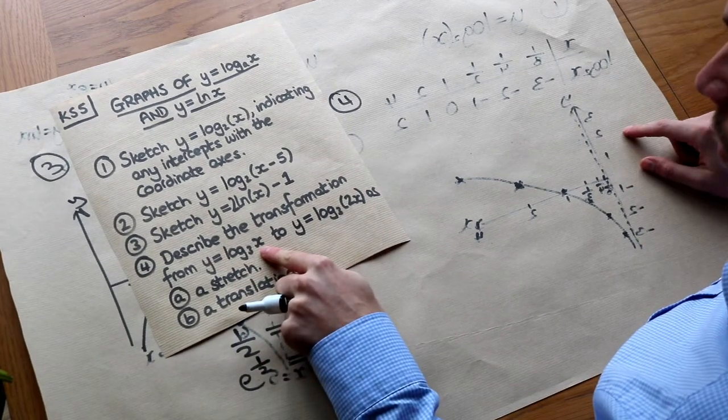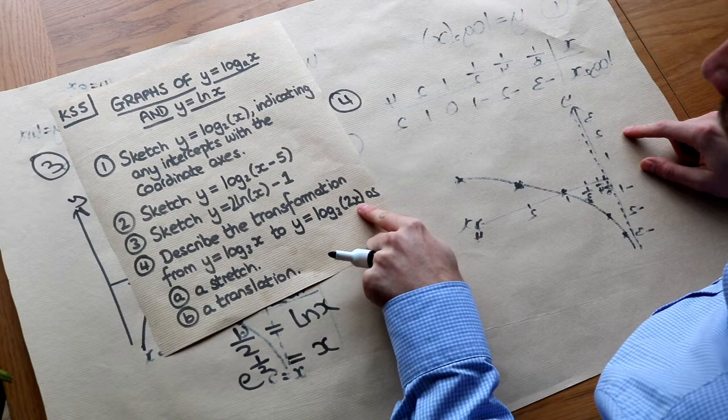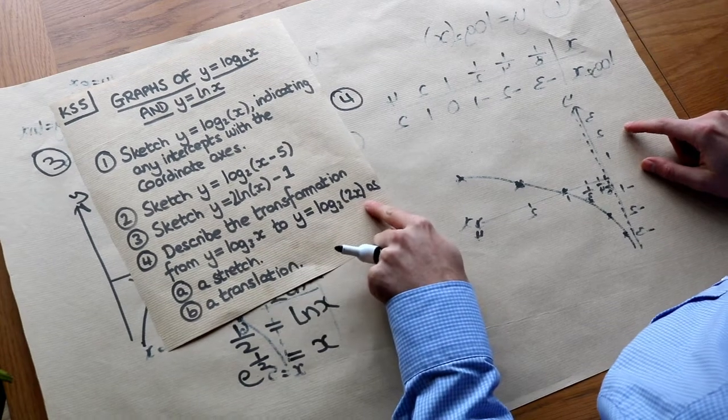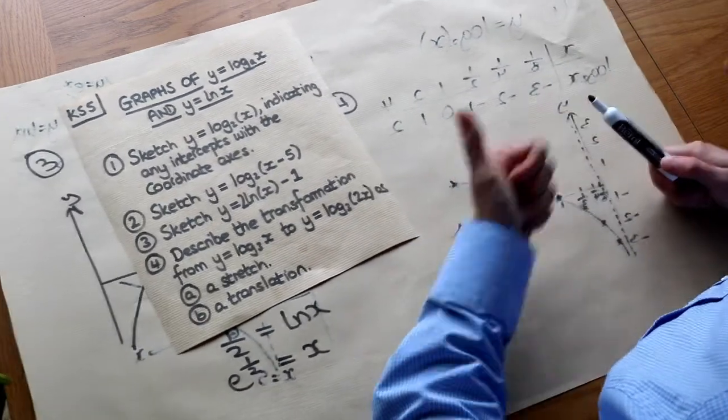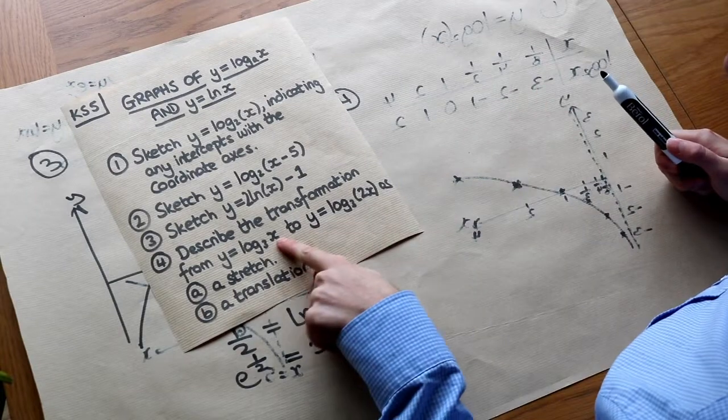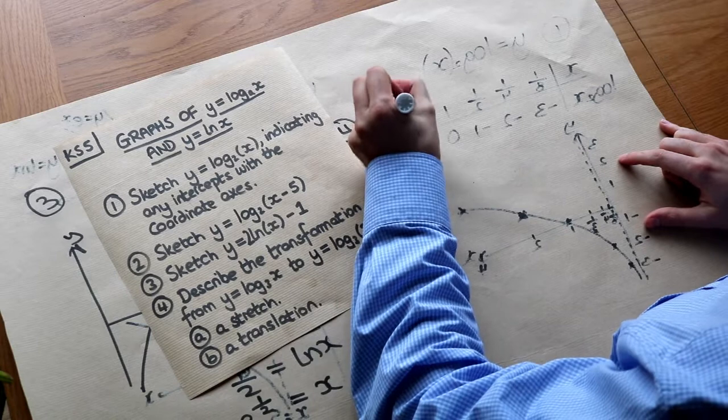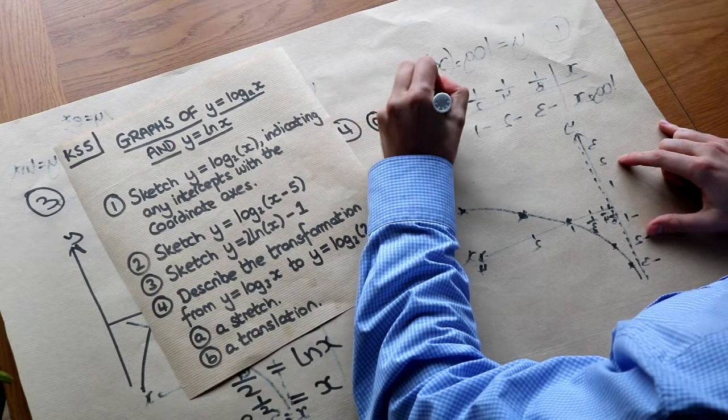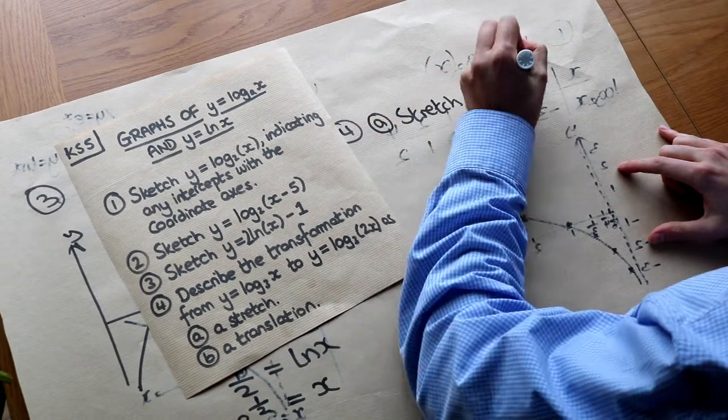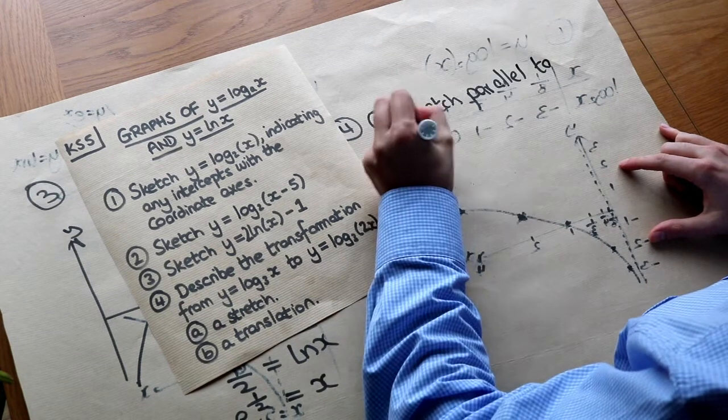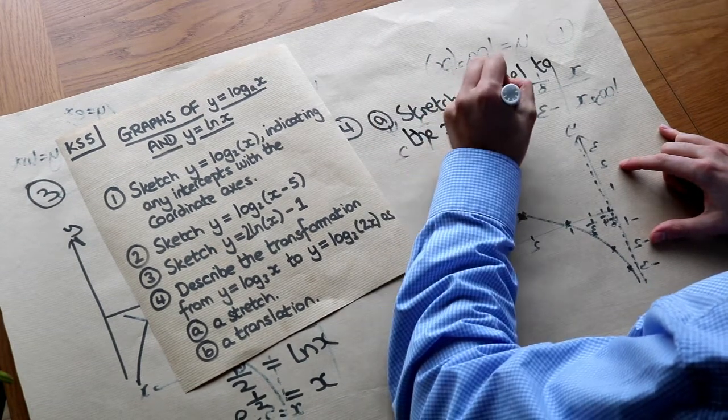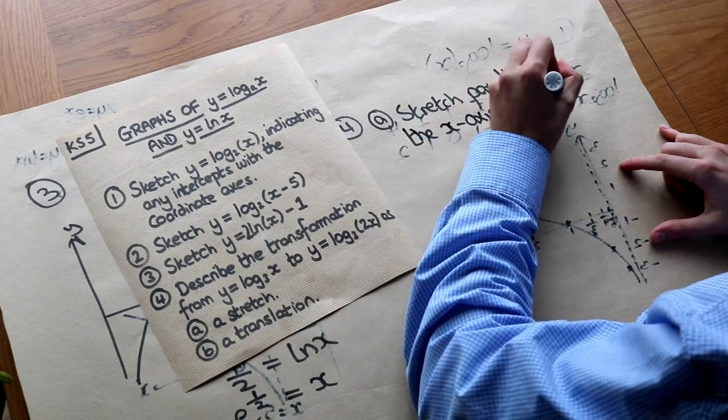Now in order to get the stretch, notice that the x has been replaced with 2x, and that change was inside the function. So we know that's going to affect the x values, and it's going to do the opposite. So it's going to half the x values. So we could describe that as a stretch parallel to the x axis, and it's going to be by scale factor a half.